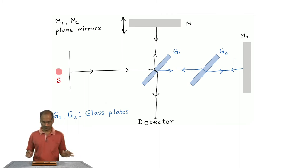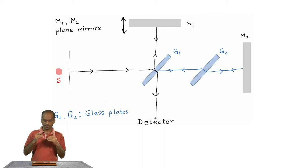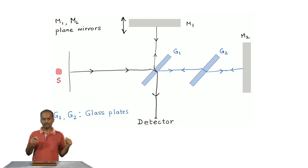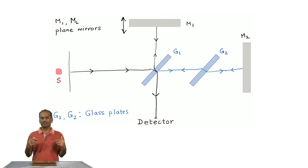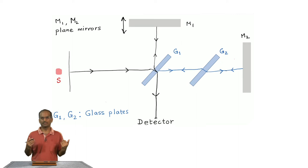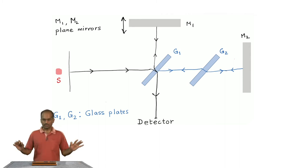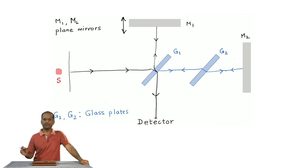The reason we need G2 is clear if you look carefully at the diagram. The beam that starts from the source, goes through G1, hits M1, and finally comes to the detector passes through G1 three times. On the other hand, the beam that passes straight through G1, hits mirror M2, and comes back to the detector passes through a glass plate only once. To compensate for this difference, we introduce G2, which equalizes the optical path difference. In principle you need not require G2 if you can adjust the length of the M2 arm instead.